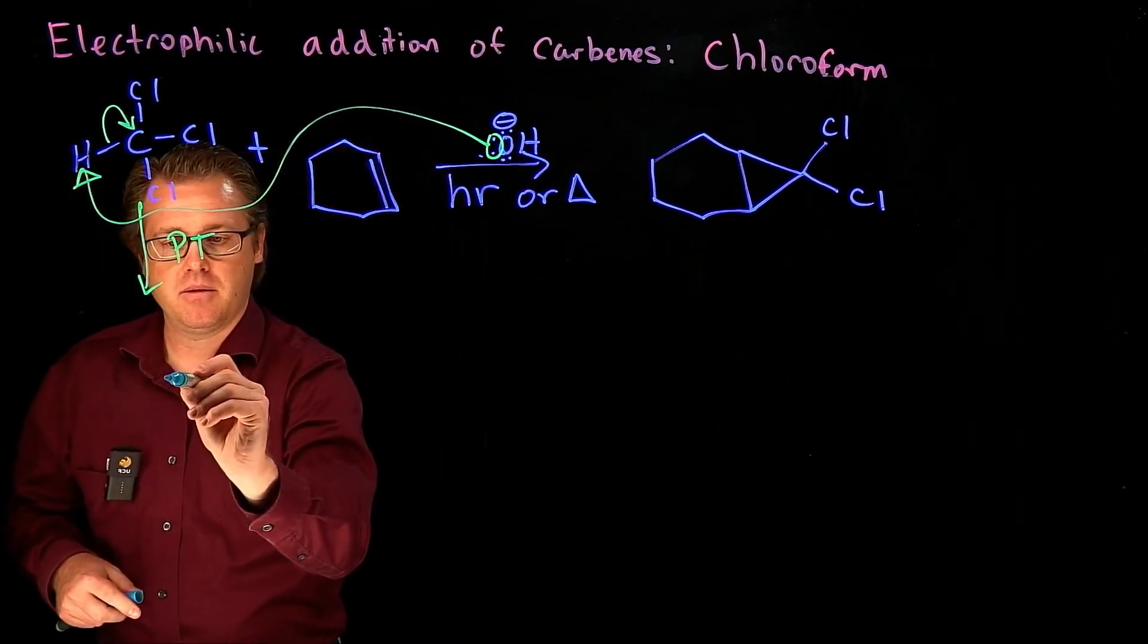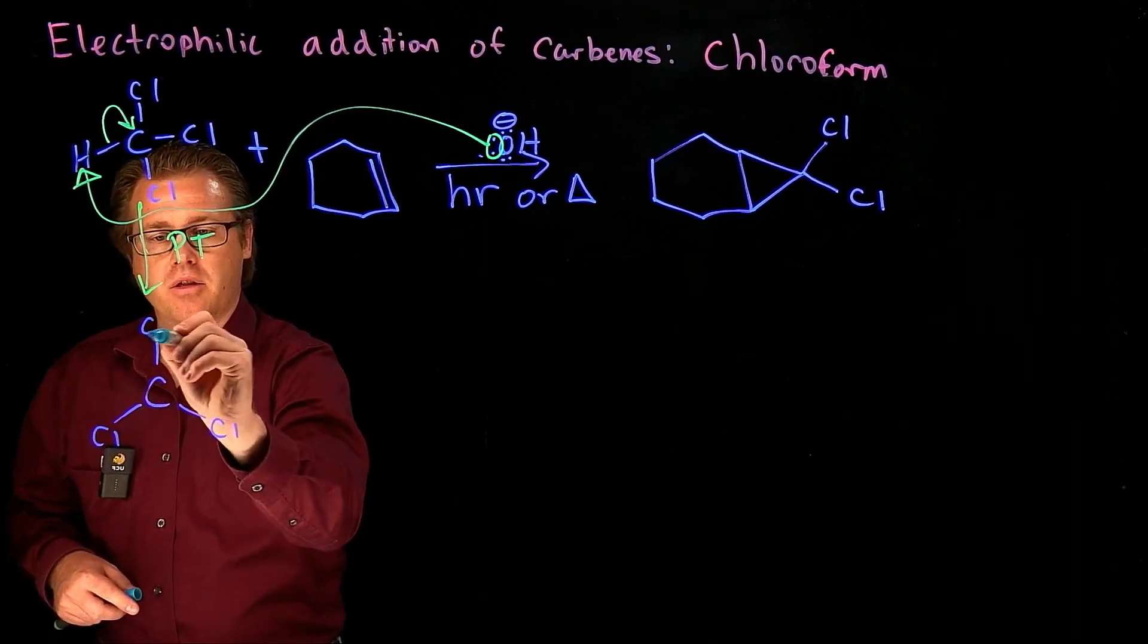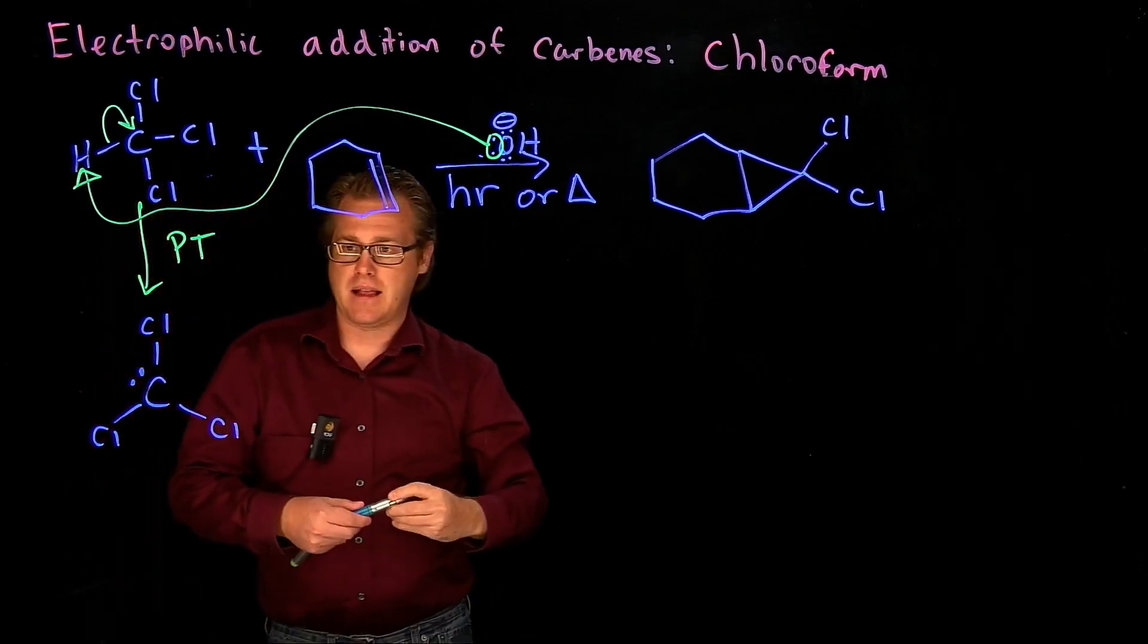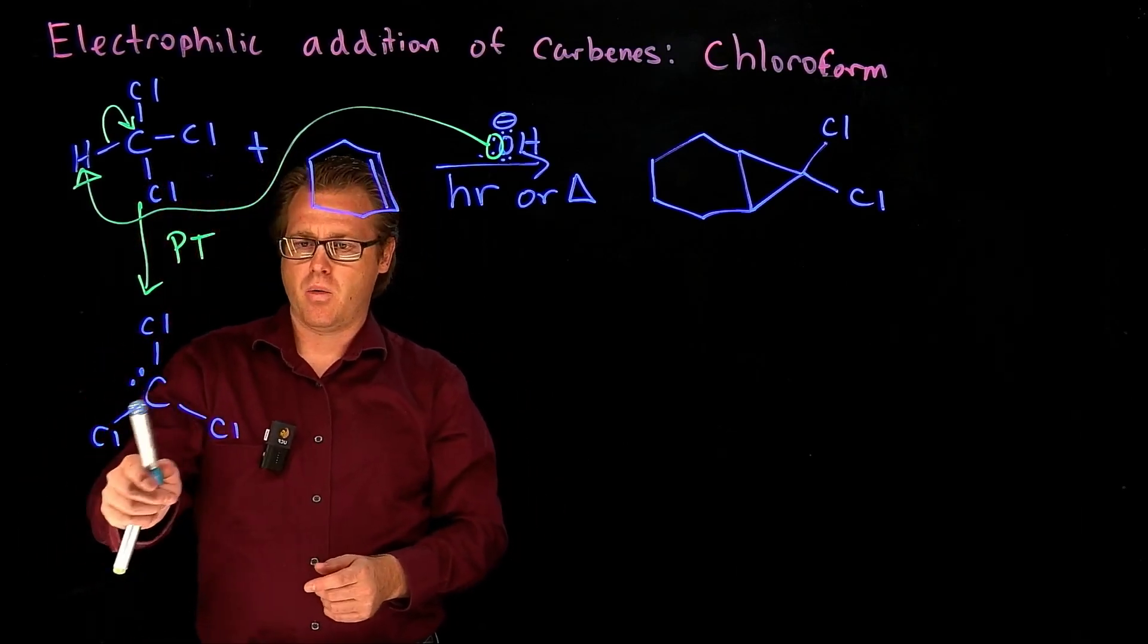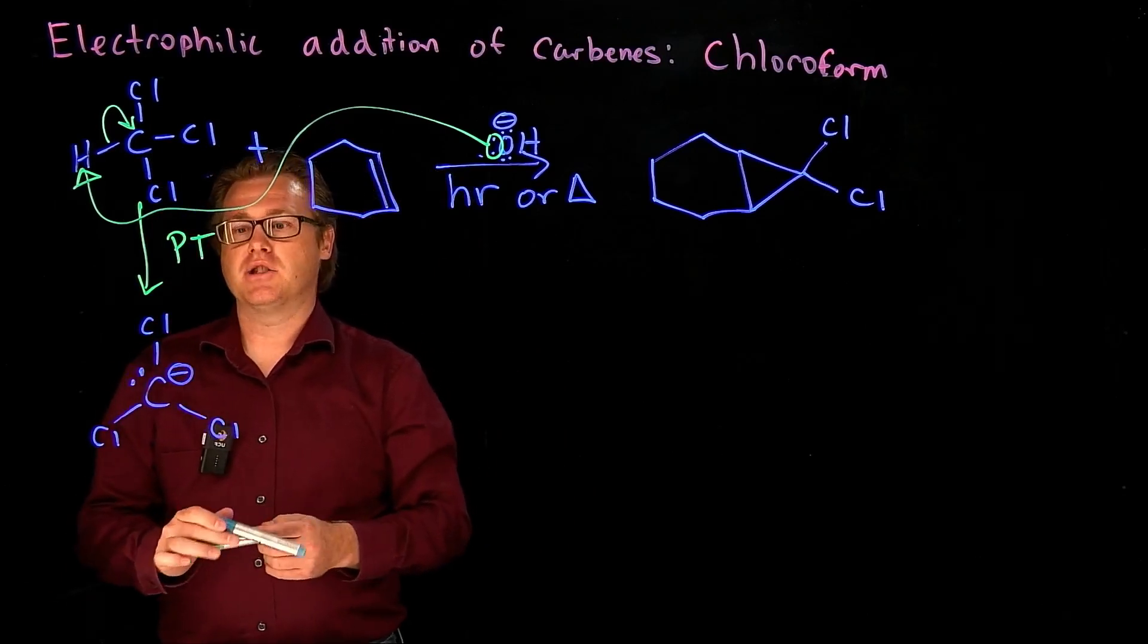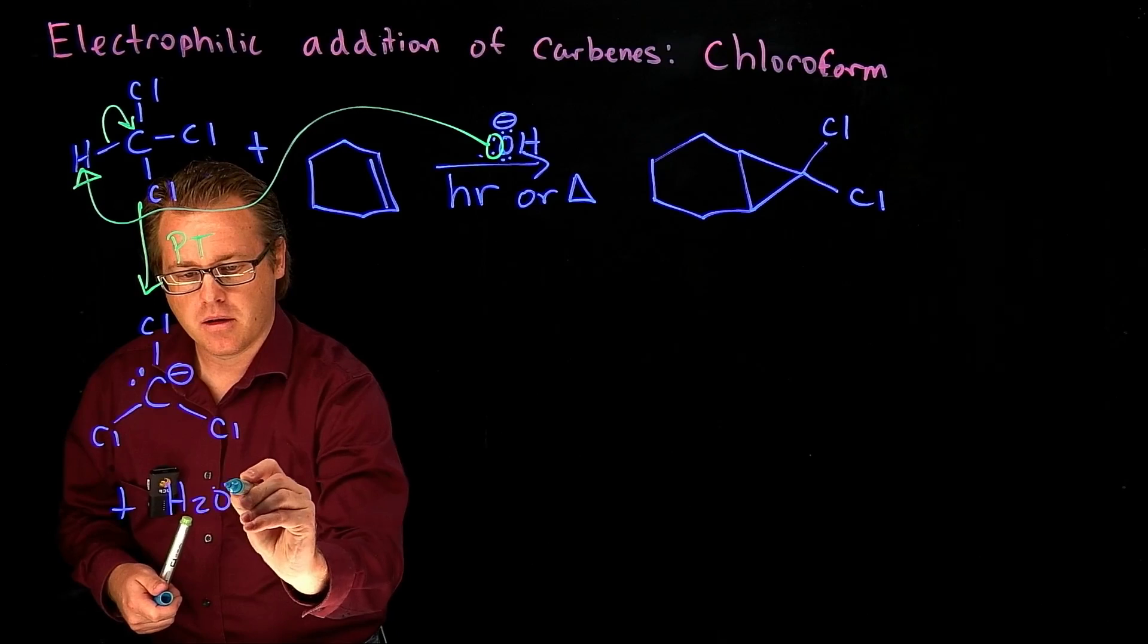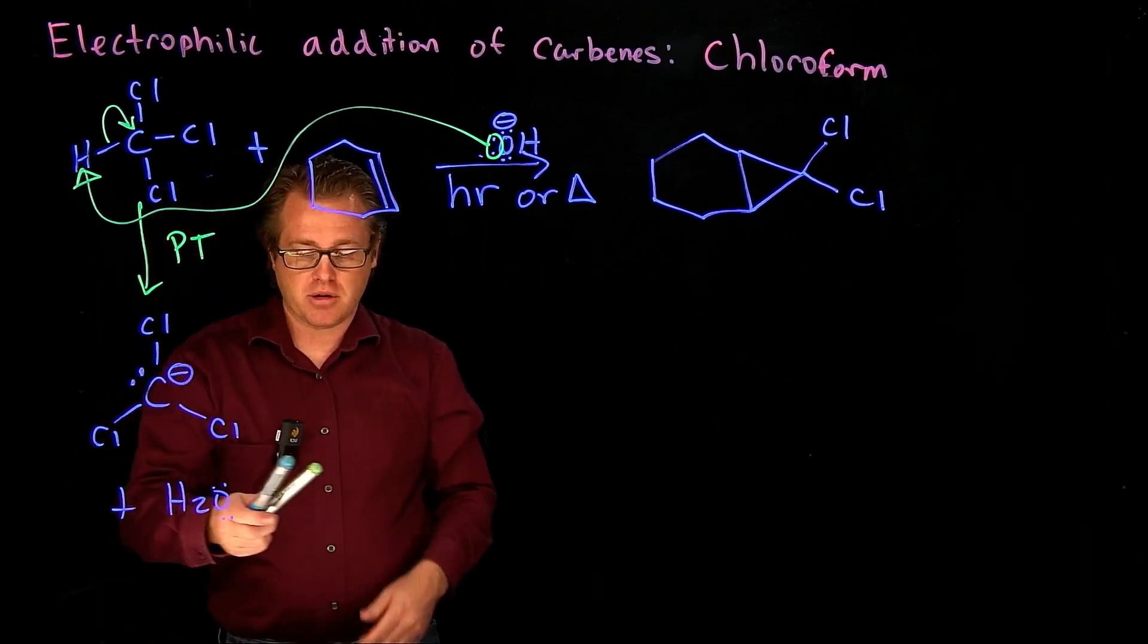And what are we going to generate? We're going to have a carbon here with three chlorines and a lone pair. Is that neutral? Let's see. One, two, three, four, five. No, that's going to be negatively charged. Still has its octet. And we also generated what? Some water. And so there's our proton transfer.